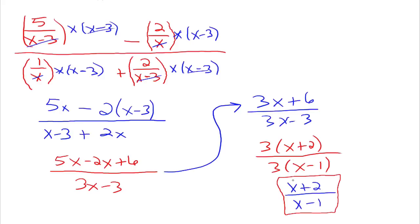Complex fractions: the goal is to take the complex fraction and rewrite it so it's not a complex fraction anymore. My recommendation is to find the least common denominator of all the little baby fractions, then multiply the numerator and denominator of the big fraction by that LCD to wipe out the little baby fractions. Then simplify whatever is remaining and reduce that fraction.